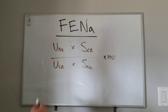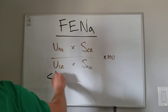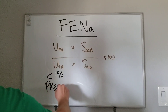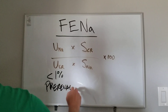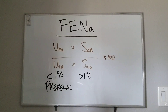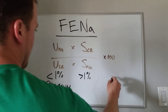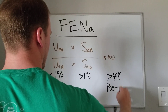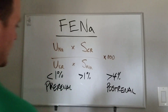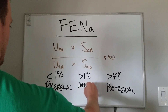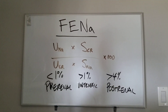What these scores mean: if you have a score less than 1% after you calculate this out, that means you have some sort of pre-renal source for your azotemia. Greater than 1% is intrinsic, meaning you have ATN or some process inside the kidney itself. Greater than 4% is some sort of post-renal, like a kidney stone or ureteric obstruction or something. Most common cause of pre-renal will be something like dehydration.